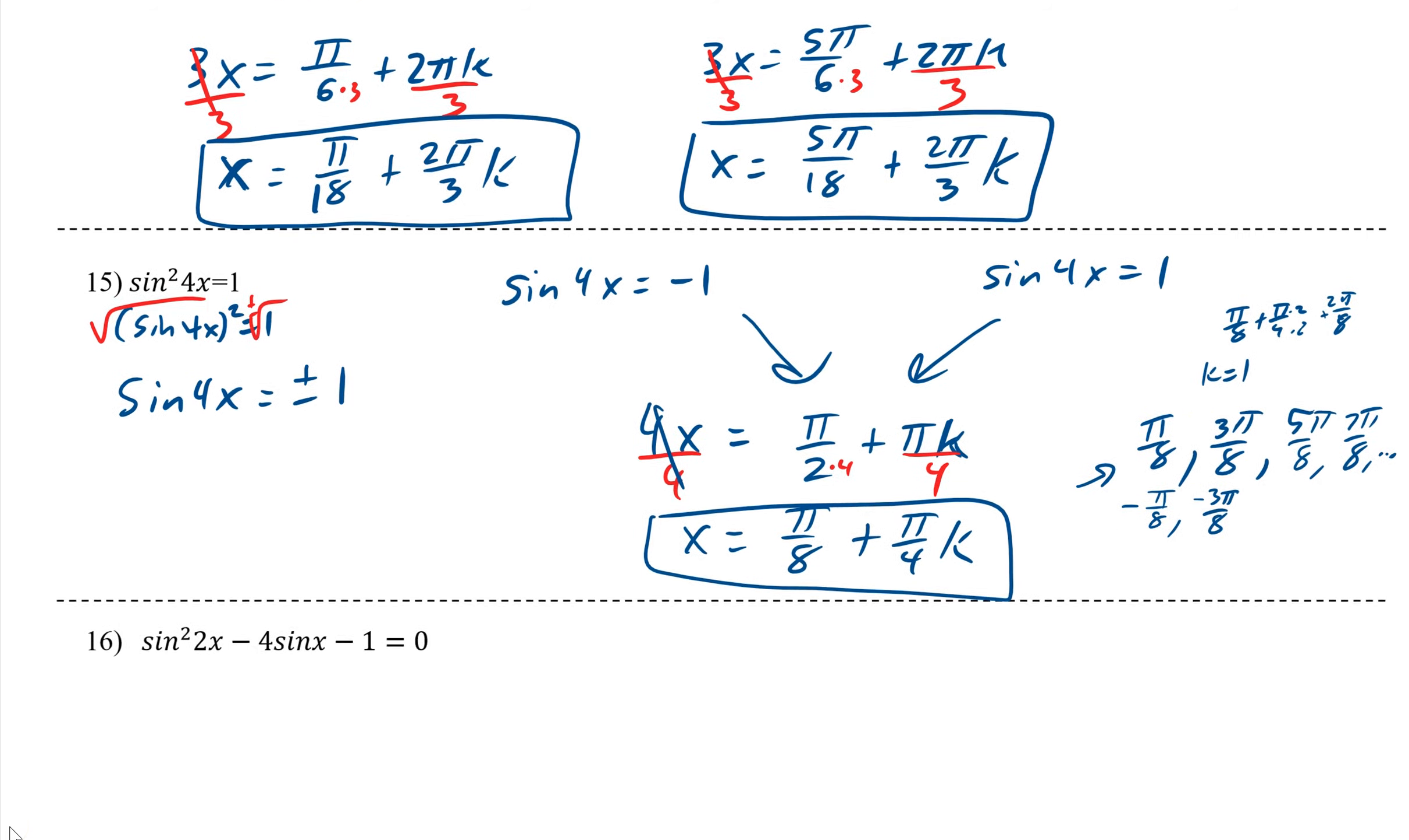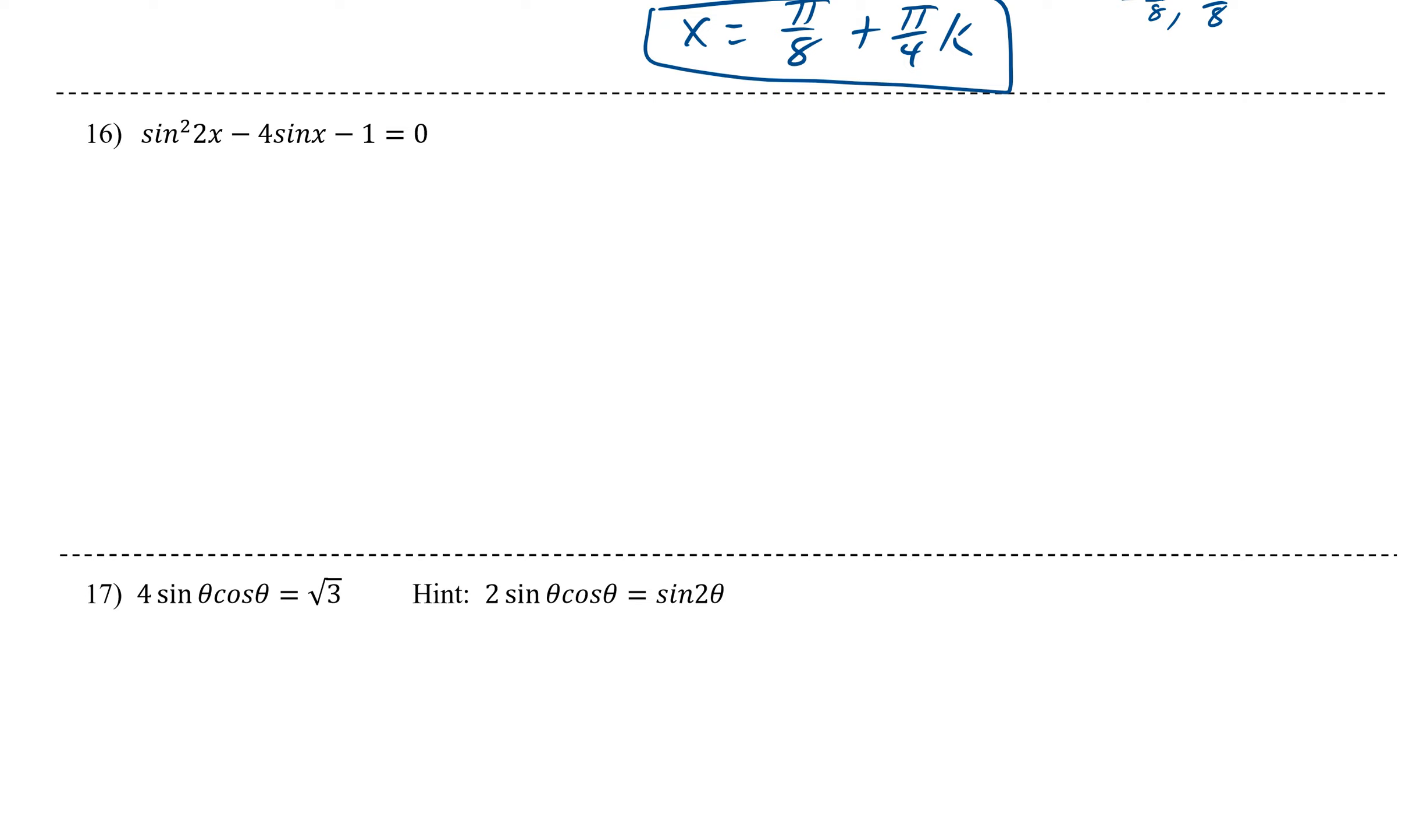The next ones are going to be a little bit different. This is a typo here. This should also be a 2x. There are ones that you can use double and equal 4, but I want this to work the way it is. So now, if we say a equals sine of 2x, we would then have a squared minus 4a minus 1 equals 0. And this is not factorable. So what do you do? This is when we get to use quadratic formula.